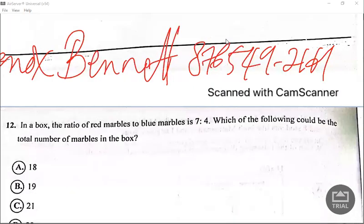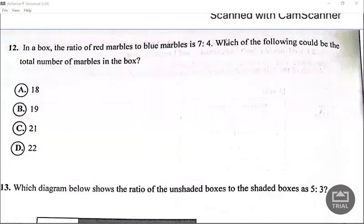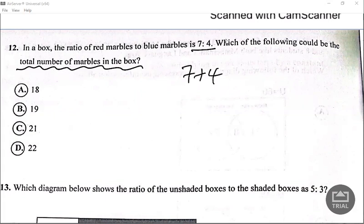In a box the ratio of red marbles to blue marbles is 7 to 4. Which of the following could be the total number of marbles in the box? So all we have to do is just add the total which is 7 plus 4 is 11. Now the only number that is divisible by 11 is 22.